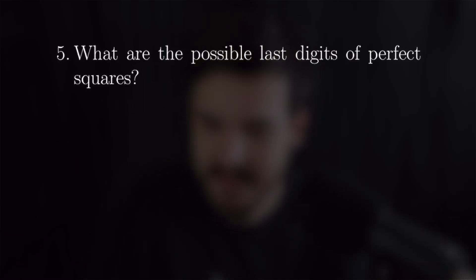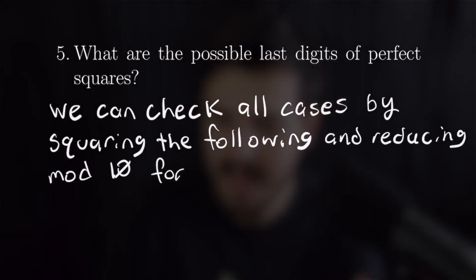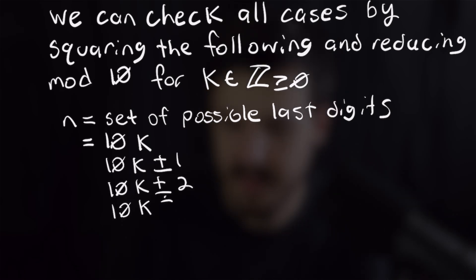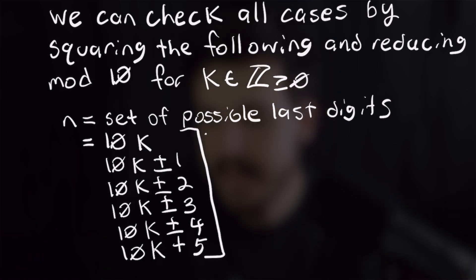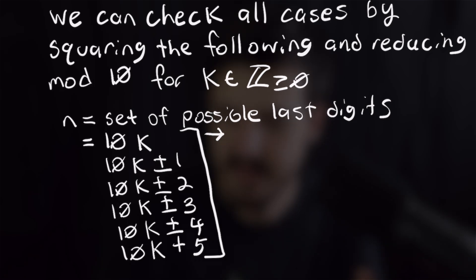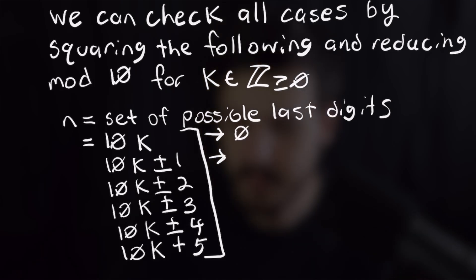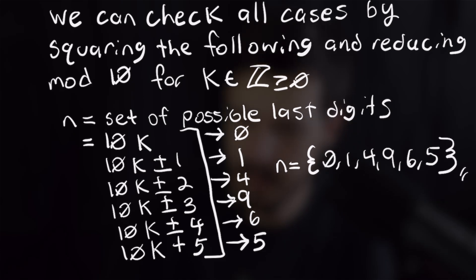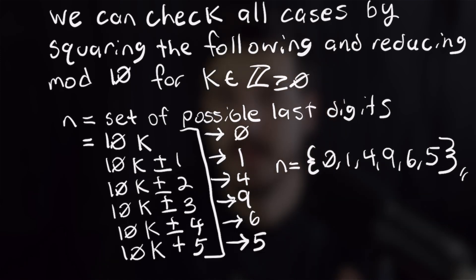For problem 5 we want to find the possible last digits of perfect squares. Every natural number has the form 10k, 10k±1, 10k±2, 10k±3, 10k±4, or 10k+5. Squaring each case and reducing mod 10: these yield last digits 0, 1, 4, 9, 6, and 5, respectively. So the possible last digits of perfect squares are 0, 1, 4, 5, 6, and 9. That's all for this video.